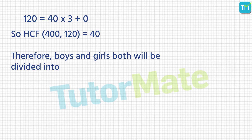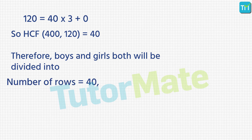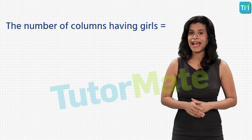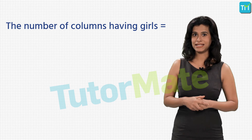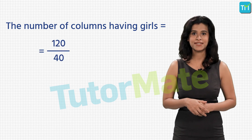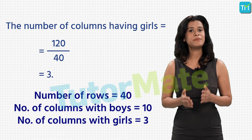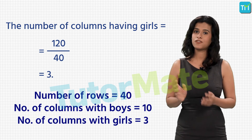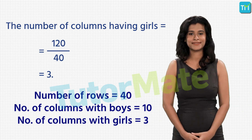Therefore, 120 = 40 × 3 + 0. This marks the end of the algorithm, and the HCF of 400 and 120 is the final divisor, which is 40. That means you divide the boys and girls into 40 rows each, with 400 ÷ 40 = 10 columns of boys and 120 ÷ 40 = 3 columns of girls. To conclude: there will be 40 rows of boys in 10 columns and 40 rows of girls in 3 columns. Solved it!